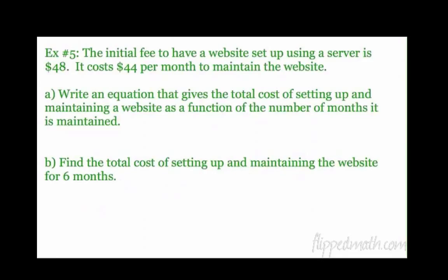You guys are rocking it. Let's raise it up a notch. Oh, word problem. Application. Extending our knowledge. We love it. So let's see. The initial fee to have a website set up using a server is $48. Initial fee, that's our b. That's our starting value. 48. It costs $44 per month to maintain the per month. Per, that's a rate. That rate of change is slope. 44. Plug it in. y equals mx plus b. So y equals 44x plus 48. There we have an equation.